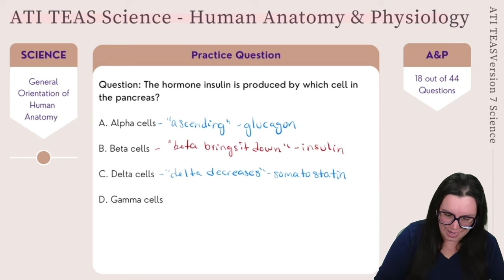Our next question: which part of the brain is primarily responsible for voluntary motor control? Is it the cerebellum, medulla oblongata, frontal lobe, or parietal lobe?